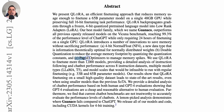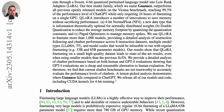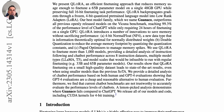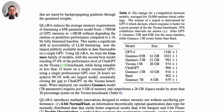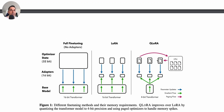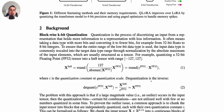The final innovation is the use of paged optimizers to manage memory spikes. This is essentially some custom code related to the low-level CUDA implementation for managing the de-quantize step and the update of these parameters, ensuring that you don't end up with an out-of-memory error in CUDA due to the potentially large number of operations involved. You can read more about that in the paper.